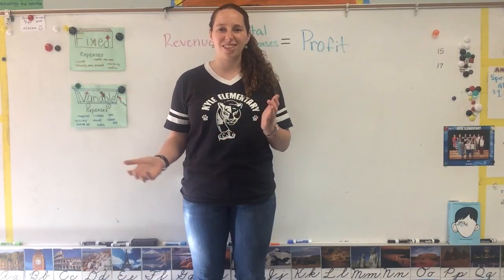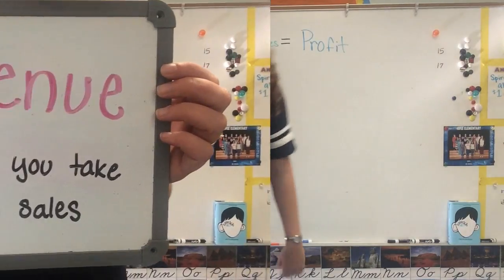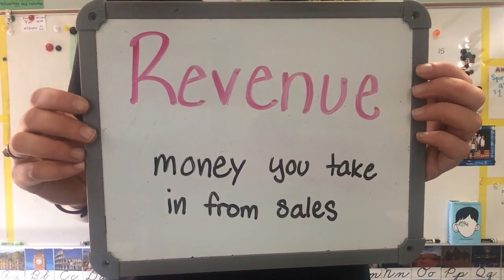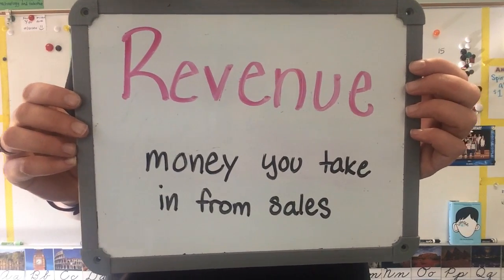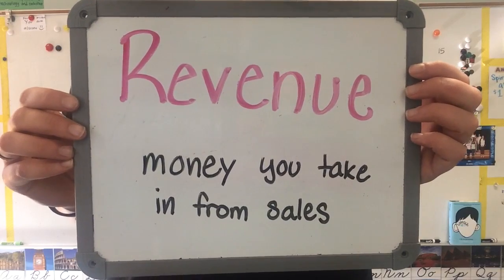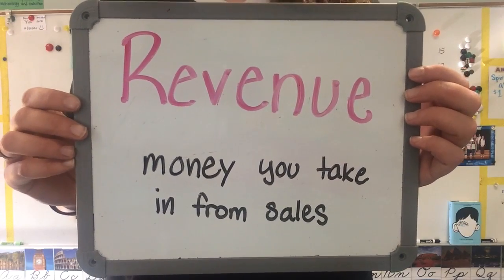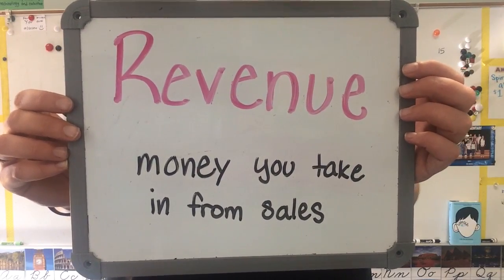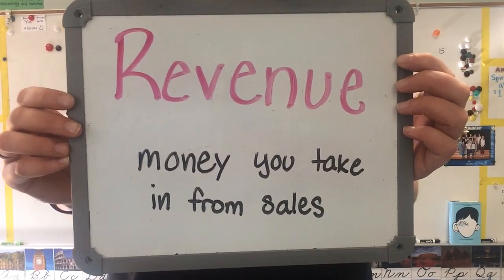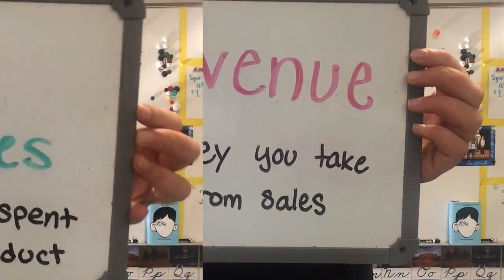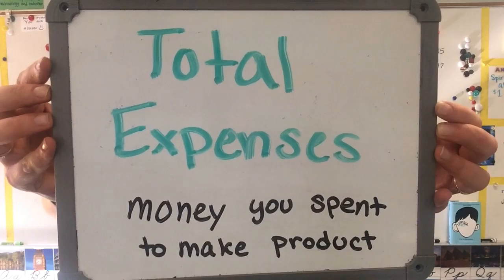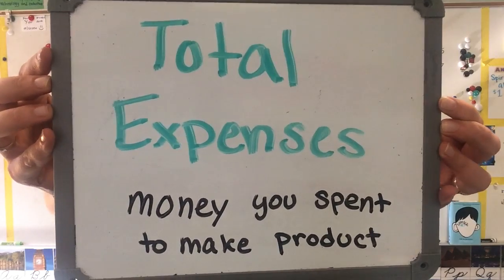Our first vocabulary word is revenue, and this is the money you take in from sales. If you're working a bake sale, all the money that people give you for your cookies is your revenue. Think of mowing lawns — the money that you earn from mowing each lawn, that's your revenue.